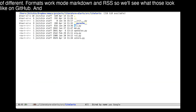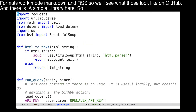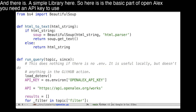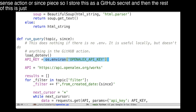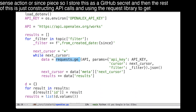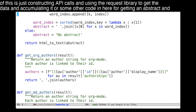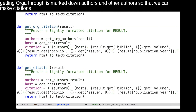Here is the basic part of the OpenALEX library. You need an API key to use the since filter, so I store this as a GitHub secret. The rest of this is just constructing API calls, using the requests library to get the data and accumulating it. There's also some code for getting an abstract, and for getting authors formatted for Org mode, Markdown, and other formats so that we can make citations.